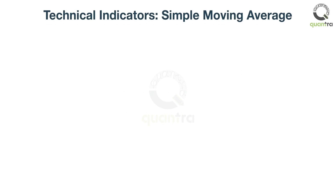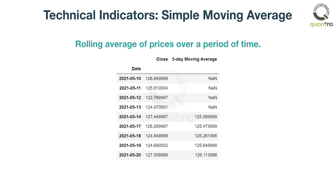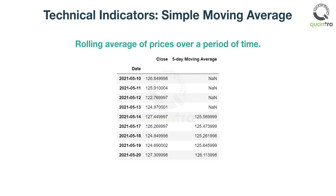For example, a simple moving average is the rolling average of prices over a period of time. Say you have the daily price data of a security and you need to calculate the moving average with period 5. The first moving average is calculated by taking the average of the first 5-day closing prices. Similarly, the next moving average is calculated by taking the average of the next 5 closing prices, and so on.